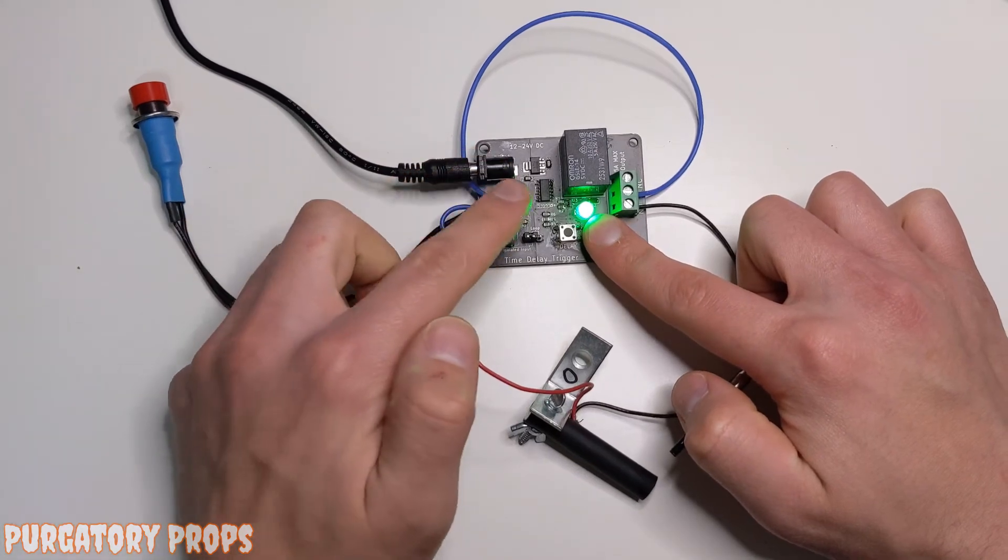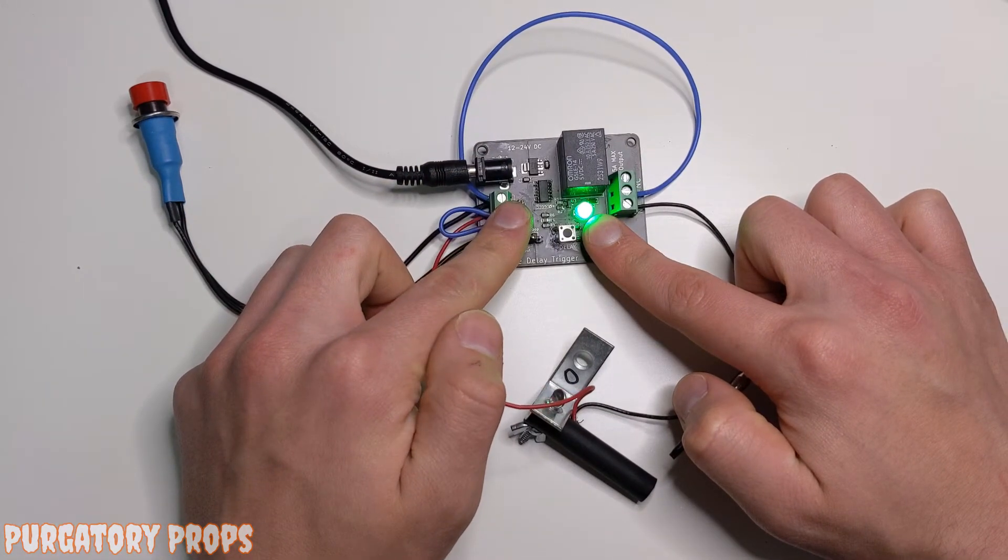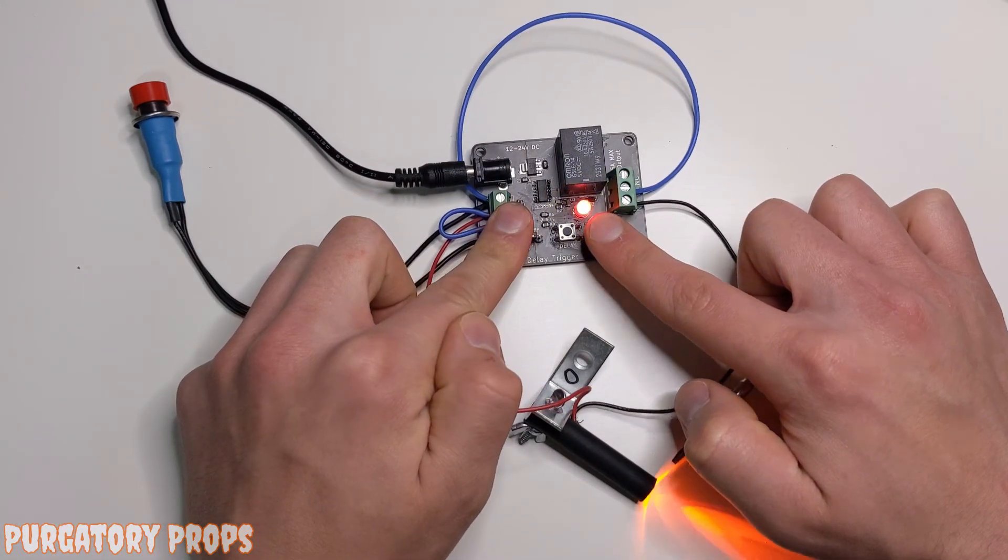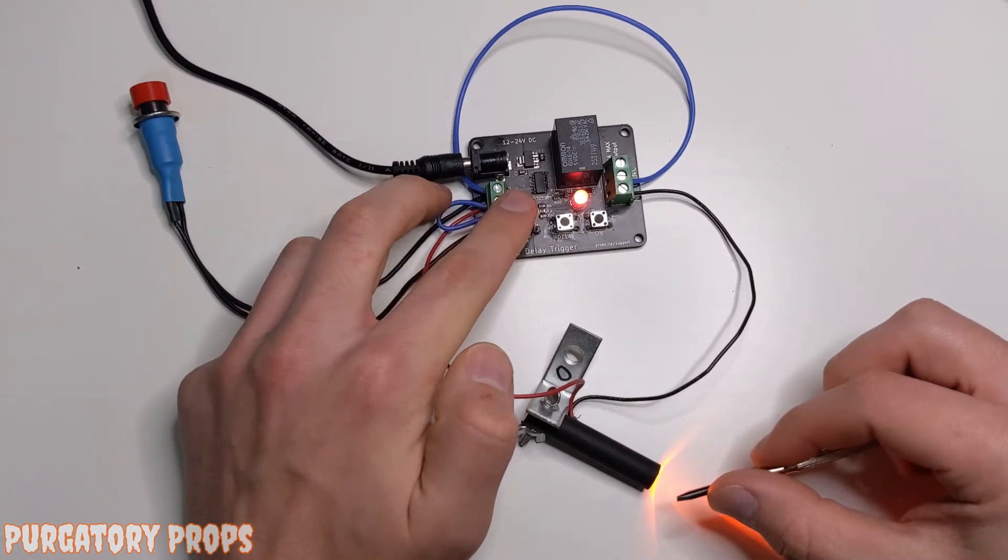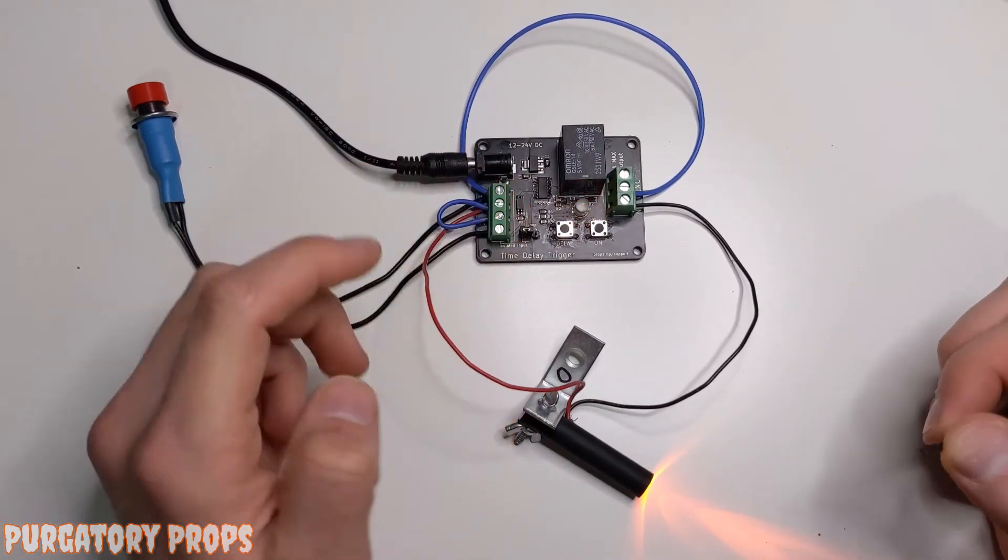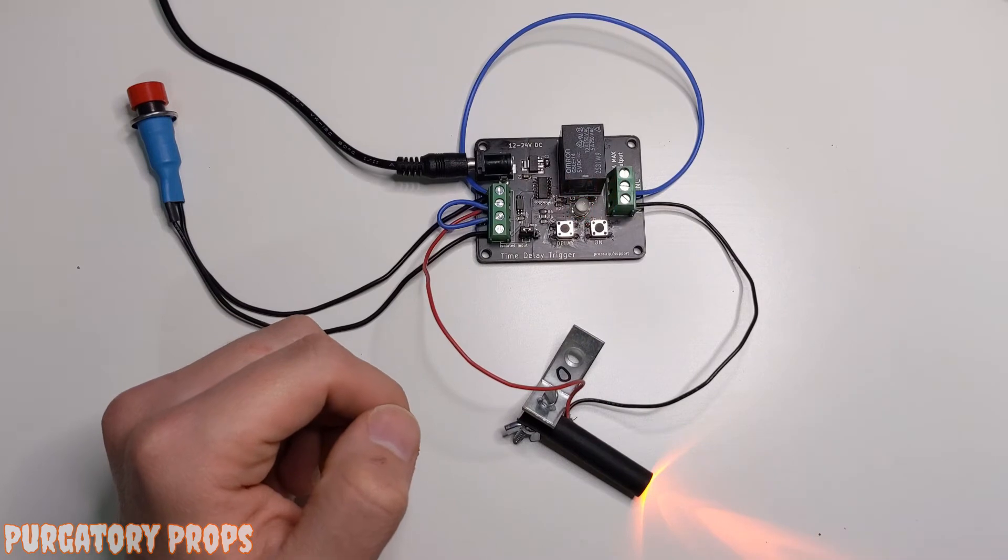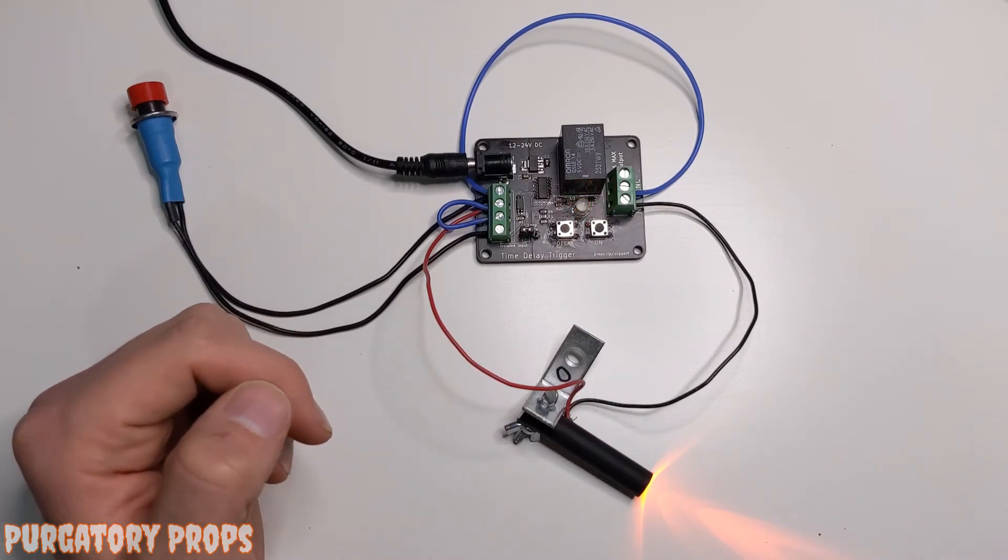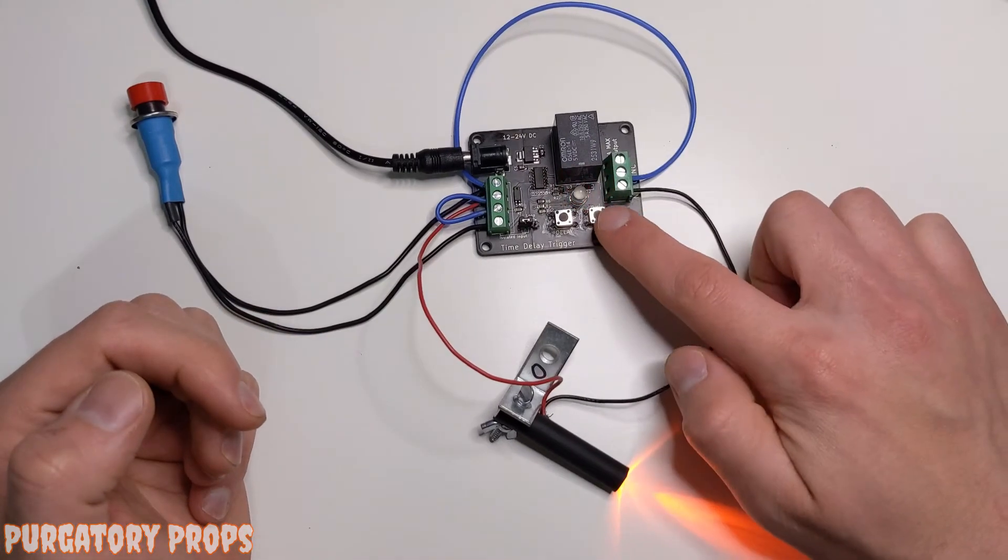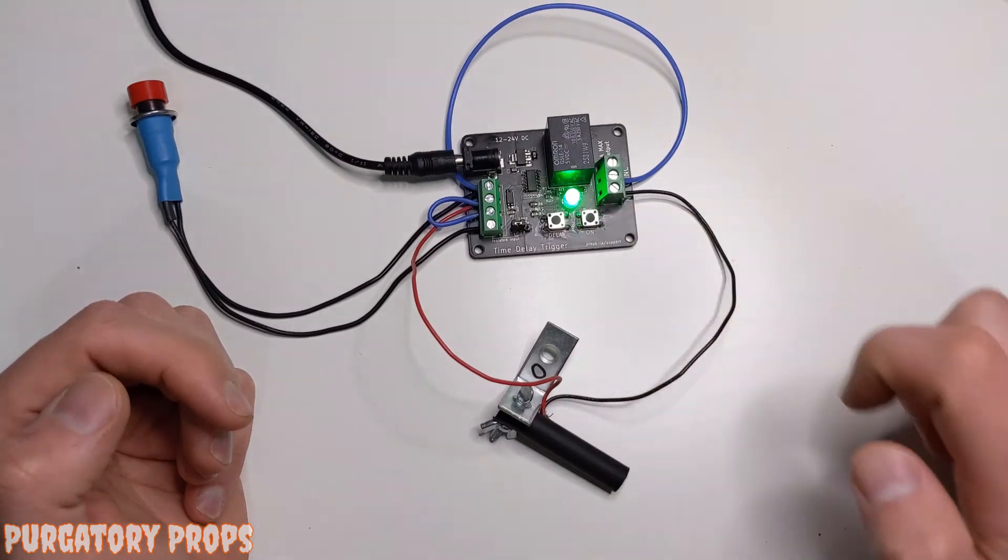You can do the same exact thing for on. Now when I release this, the relay will turn on so you can visually see what is happening. Once you reach the amount of time desired, just press on again.